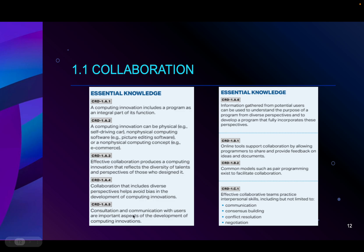Consultation and communication with users are important aspects of computing innovation development. If you're making an app targeted to a group of people, it makes sense to talk to those people to see what they want. The worst thing a developer can do is create a program just for themselves. You make it for the people you hope will use it — so you do research, surveys, focus groups, create a beta version, have people test it, get feedback. Information gathered from potential users can be used to understand the purpose of a program and develop one that fully incorporates their perspectives.